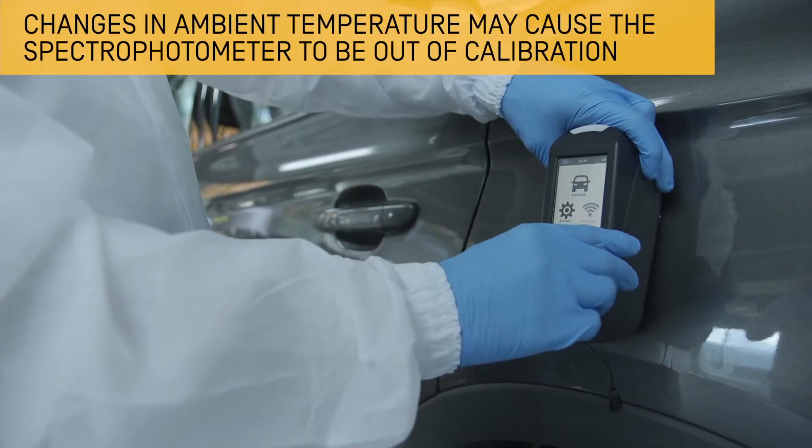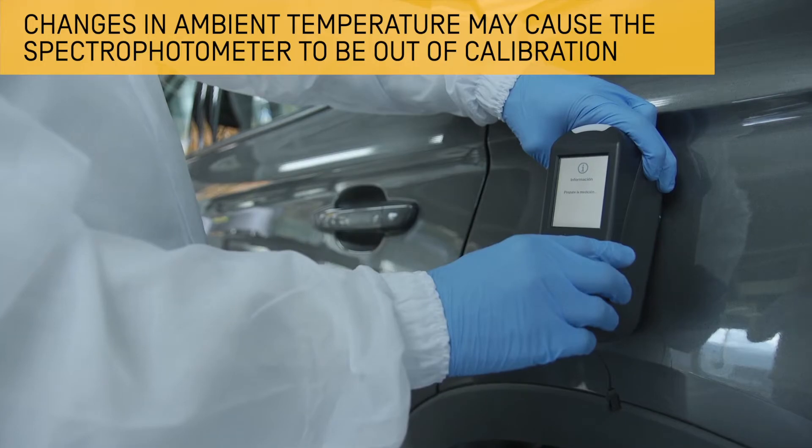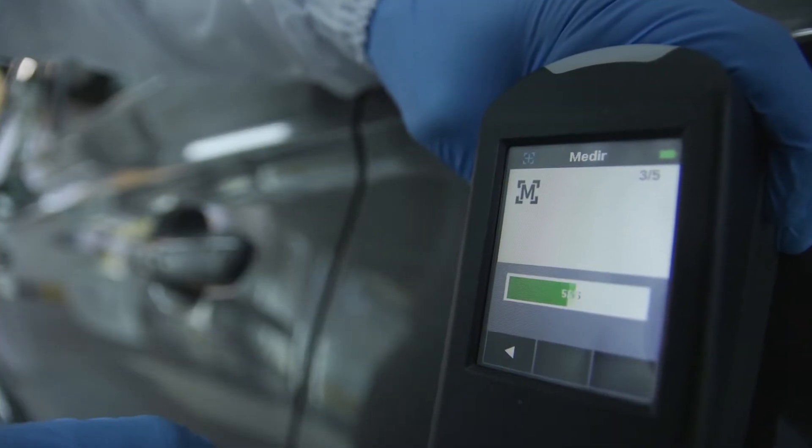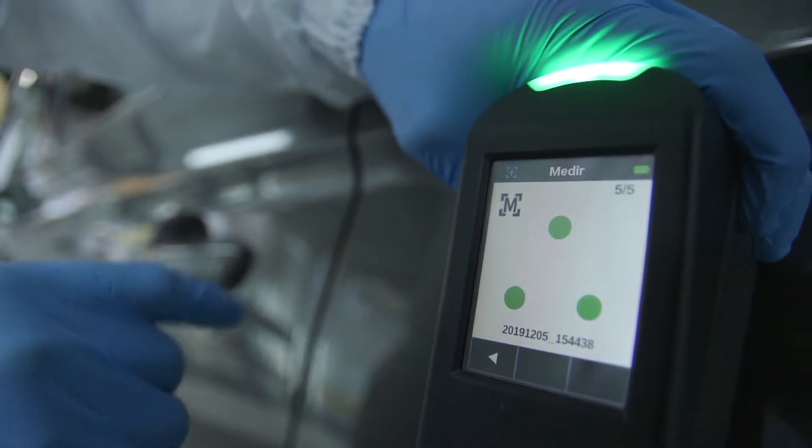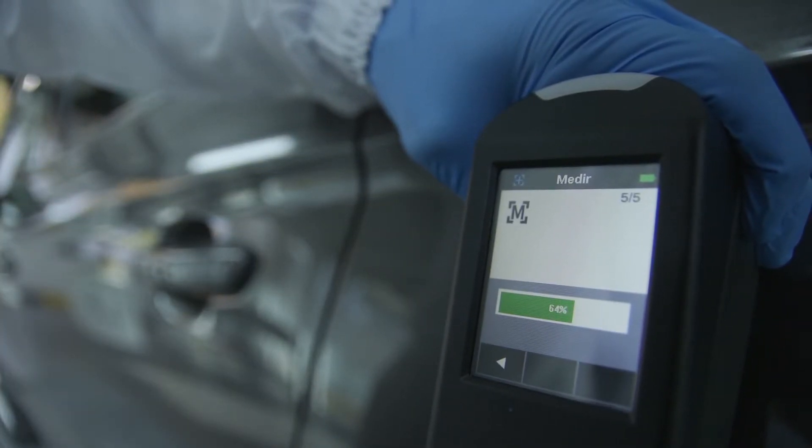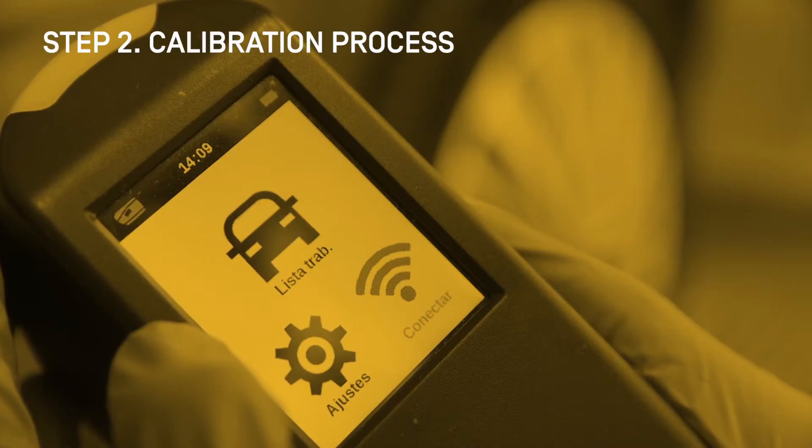Be aware that the spectrophotometer can get out of calibration due to sudden changes in ambient temperature. According to the manufacturer's instructions, the calibration process should be carried out at least every 14 days. Our recommendation is to do it on a daily basis, as the time required is minimal in relation to its benefits.